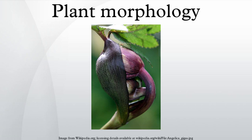First of all, morphology is comparative, meaning that the morphologist examines structures in many different plants of the same or different species, then draws comparisons and formulates ideas about similarities. When structures in different species are believed to exist and develop as a result of common, inherited genetic pathways, those structures are termed homologous.